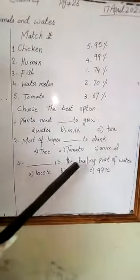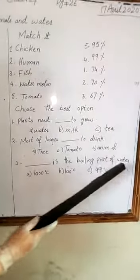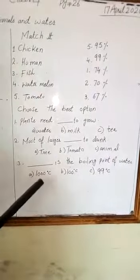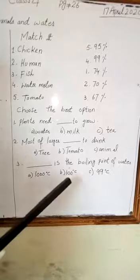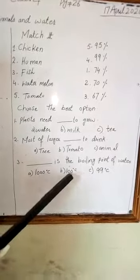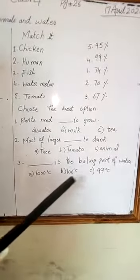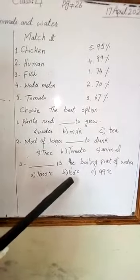Number 3: What is the boiling point of water? Options: 1000 degrees Celsius, 100 degrees Celsius, 99 degrees Celsius — right option is 100 degrees Celsius.